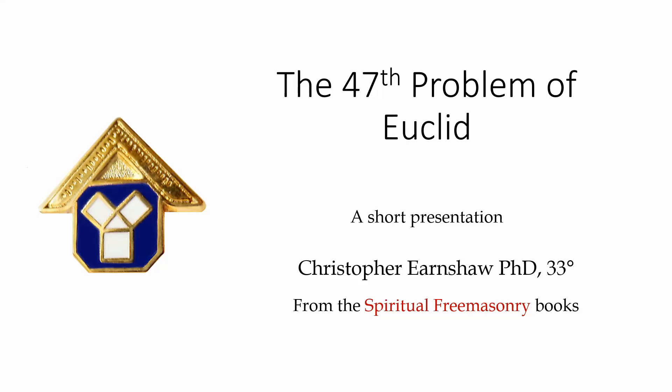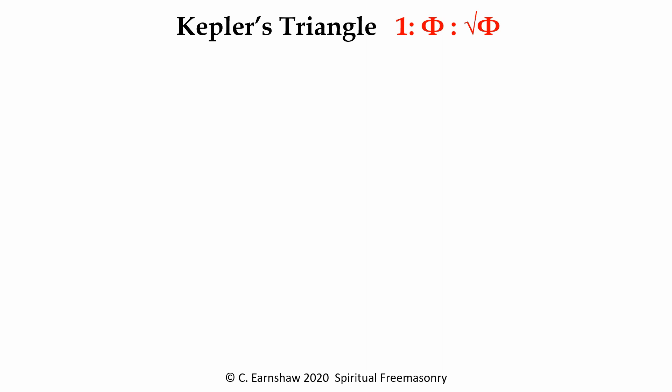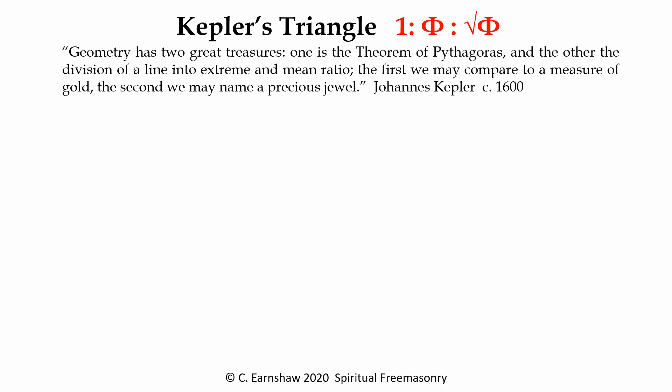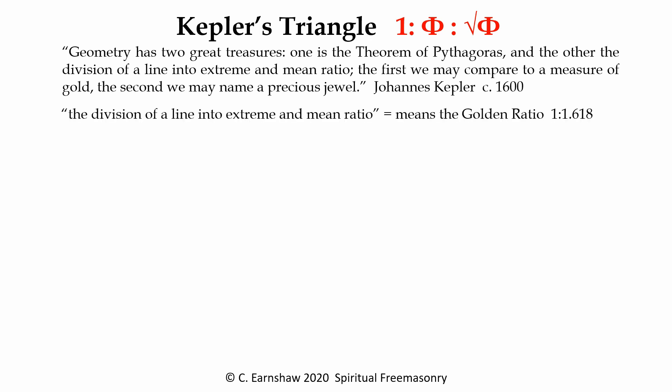Given Freemasons' interest in mathematics in the 17th century, they would have known of Johannes Kepler, who wrote an interesting article about the theorem of Pythagoras. What he called the division of a line into the extreme and mean ratio was how they defined the golden ratio.